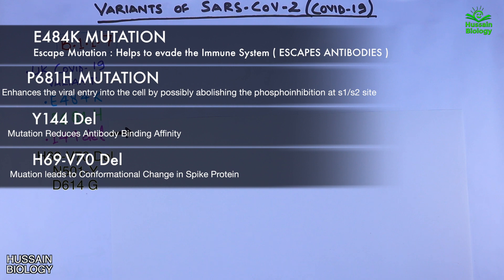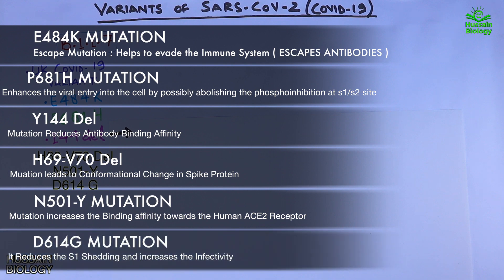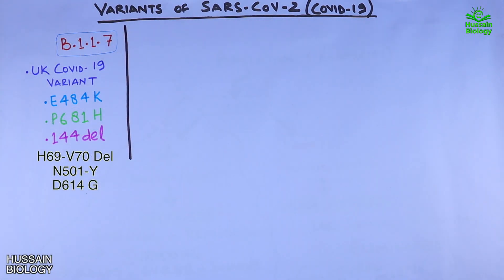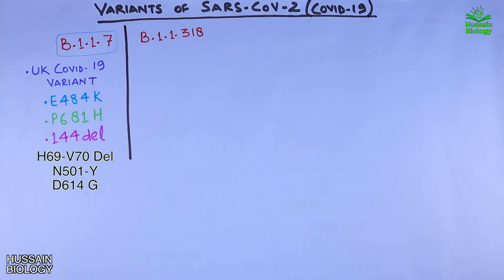The N501Y mutation increases the binding affinity towards the human ACE2 receptor. The D614G mutation, also present in the spike protein, reduces S1 shedding and increases the infectivity of the virus. Now let's move to the second variant, B.1.1.318, which is also predominantly present in the United Kingdom.